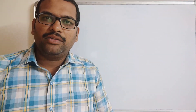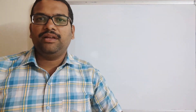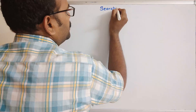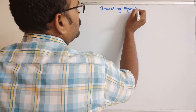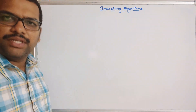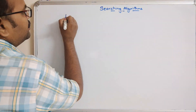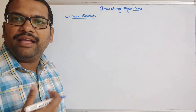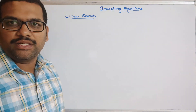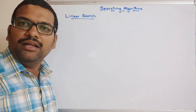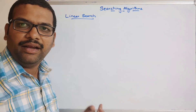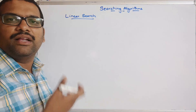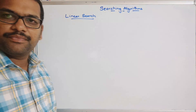Hello friends, welcome back to our channel. In today's session we will discuss one more concept in data structures — that is searching algorithms. There are different types of searching algorithms. First we will go with linear search. Searching means finding an element whether it is available in an array or a sequence. In Python we will call it a sequence, and since we can't create arrays directly without NumPy, we are taking the list concept here.